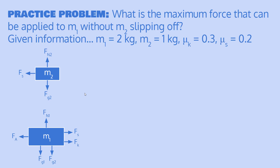Here are the two free body diagrams drawn earlier, with m1 on the bottom and m2 on the top — we'll use those for reference throughout the solution. I'm also going to define a sign convention: the positive direction will be to the left, the same direction as the applied force. This helps us know whether to add or subtract forces, so we don't accidentally add when we should subtract.